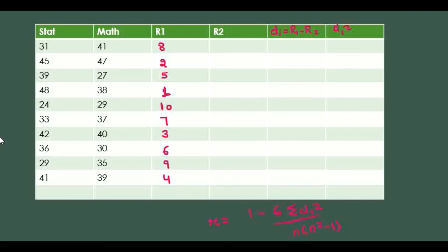Now follow the same pattern for math. The highest is 47, so rank 1. Then 41 gets rank 2, 40 gets rank 3, 39 gets rank 4, 38 gets rank 5, 37 gets rank 6, 35 gets rank 7, 30 gets rank 8, 29 gets rank 9, and 27 gets rank 10.